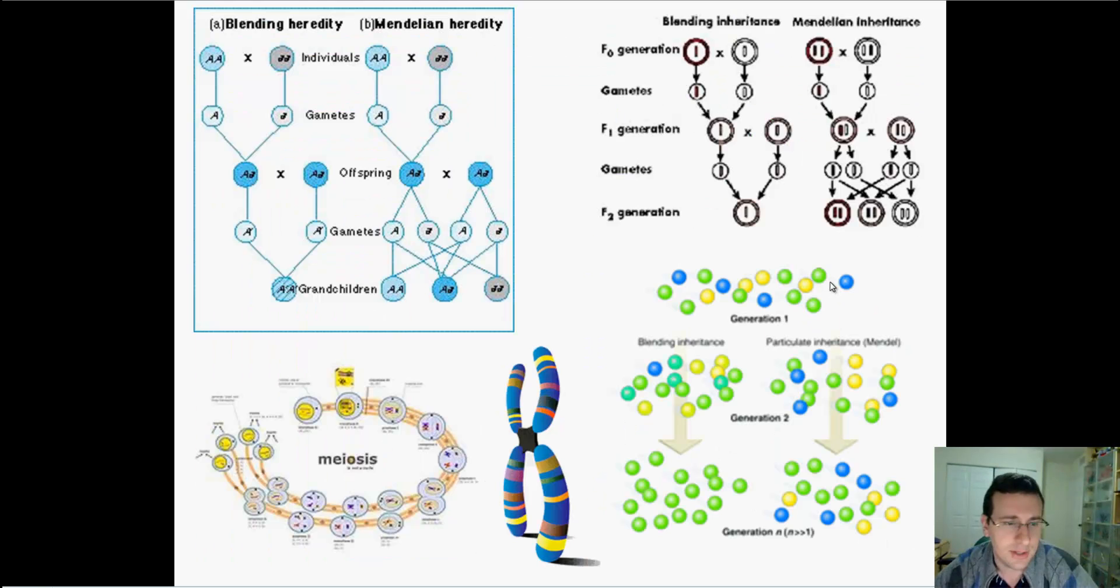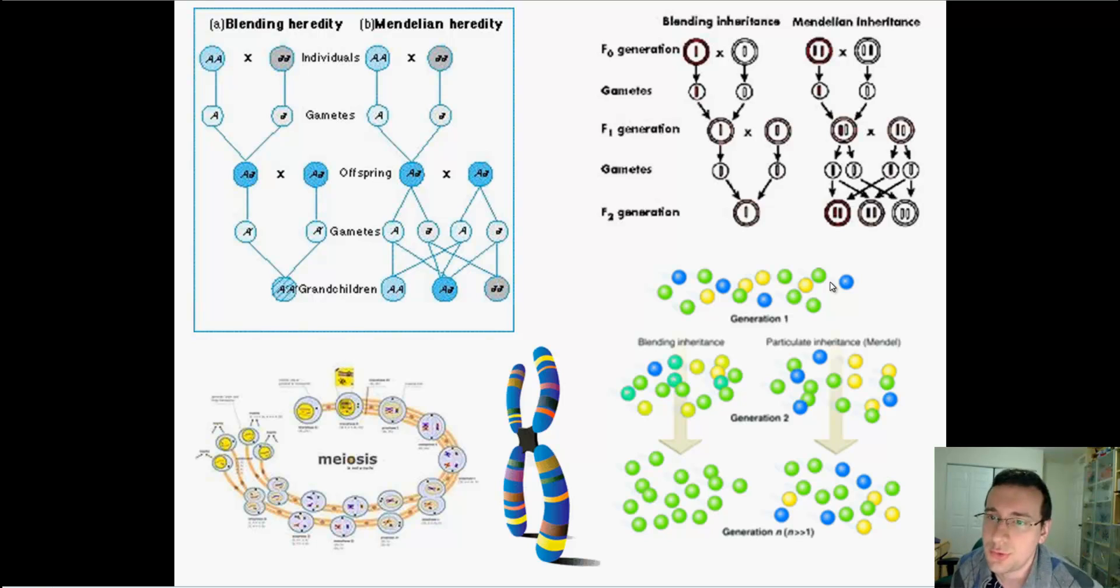After many years of studying this, he actually found his solution. He figured out that there was not blending, that instead, some magic particle was being carried from generation to generation. Something was happening, and we're going to talk about how he figured this out in the other video, but he figured out that a particle carried by mom, carried by dad, and given to you was causing you to be who you are. That was by the combination of particles between your mom and your dad that created who you are.